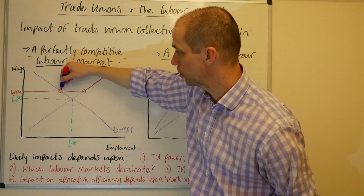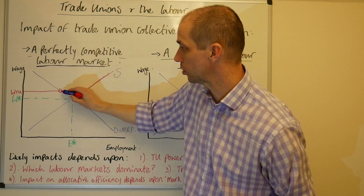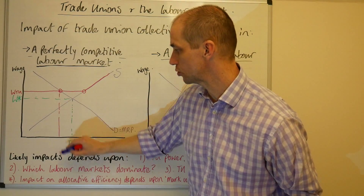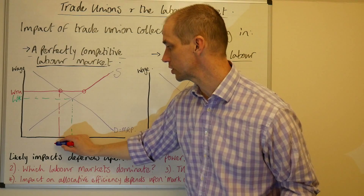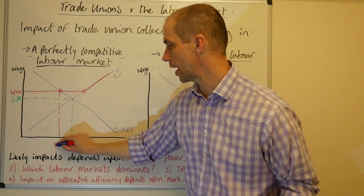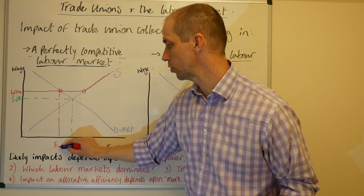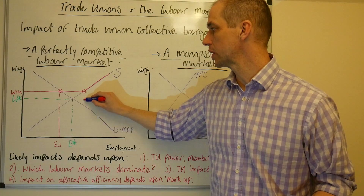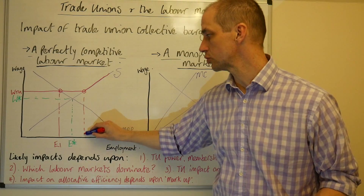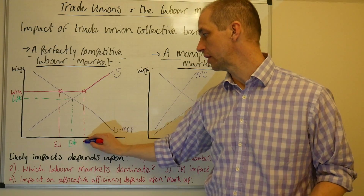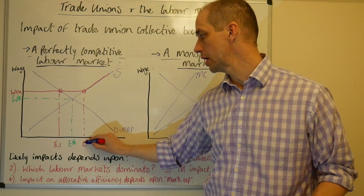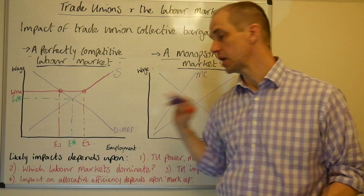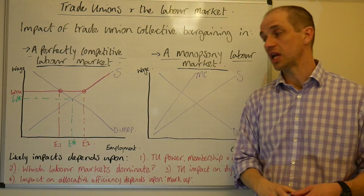We can see at this point that marginal cost equals the marginal revenue product, and we will just call that E1. Meanwhile, we can see that the actual supply of labour at this wage rate would be equivalent to E2.